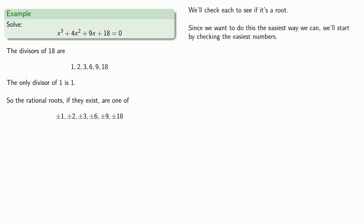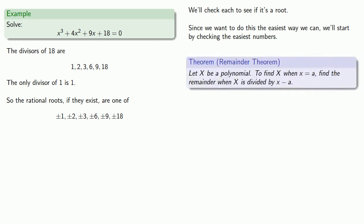Since we want to do this the easiest way we can, we'll start by checking the easiest numbers. So we'll check to see if 1 is a root. And an easy way to do that is to use the remainder theorem. Remember if we want to find the value of a polynomial at x equals a, we can find the remainder when the polynomial is divided by x minus a.